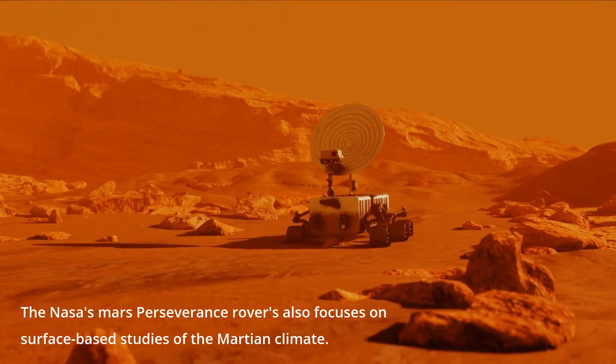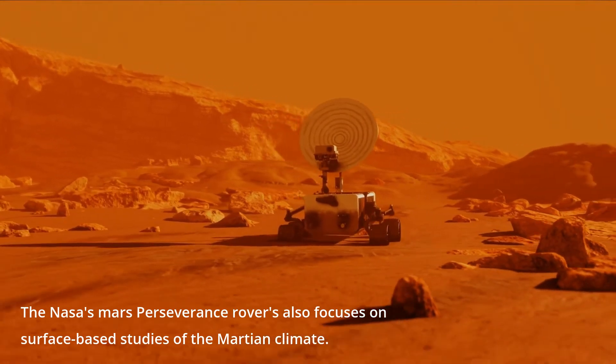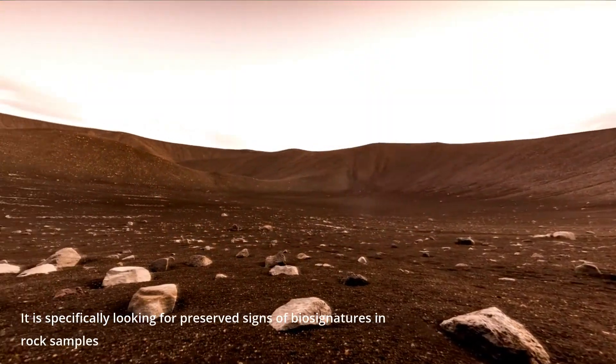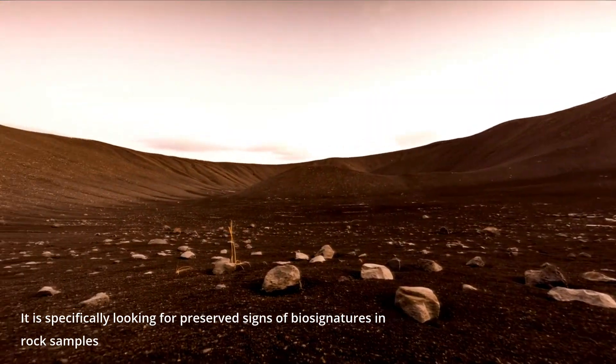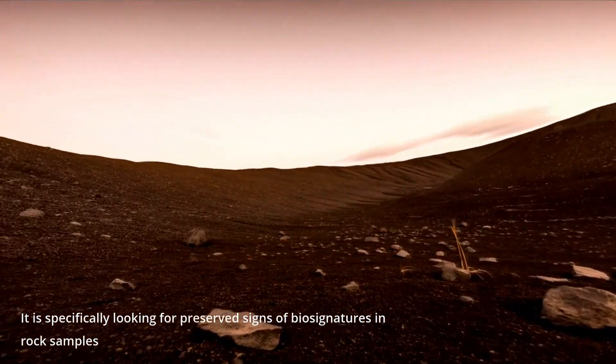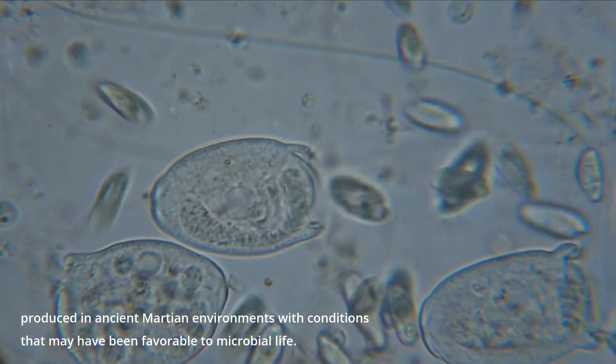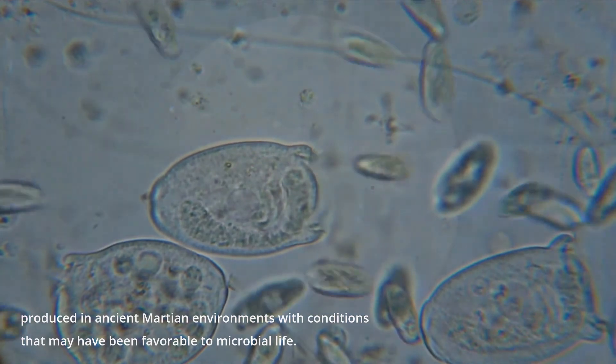NASA's Mars Perseverance rover also focuses on surface-based studies of the Martian climate. It is specifically looking for preserved signs of biosignatures in rock samples produced in ancient Martian environments with conditions that may have been favorable to microbial life.